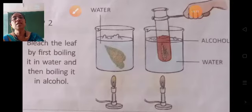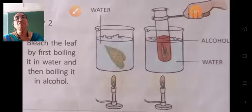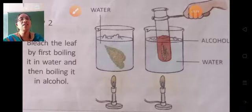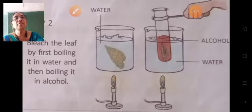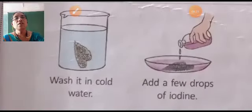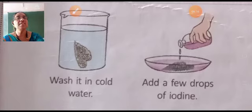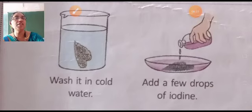Bleach the leaf by first boiling it in water and then boiling it in alcohol. Then take out the leaf, wash it in cold water, and add a few drops of iodine on it.